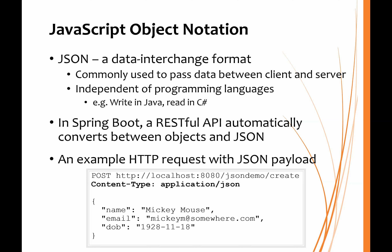That JSON string can be passed over to the C# application, which will then create a corresponding set of its own objects from that JSON string. In Spring Boot, we have the lovely advantage of the RESTful API automatically converting between the domain objects and JSON. And if we want to send an HTTP request with a JSON payload, it's very important that we tell the server that the content type of the payload is JSON. Don't forget the blank line and then the payload, which is a JSON string.